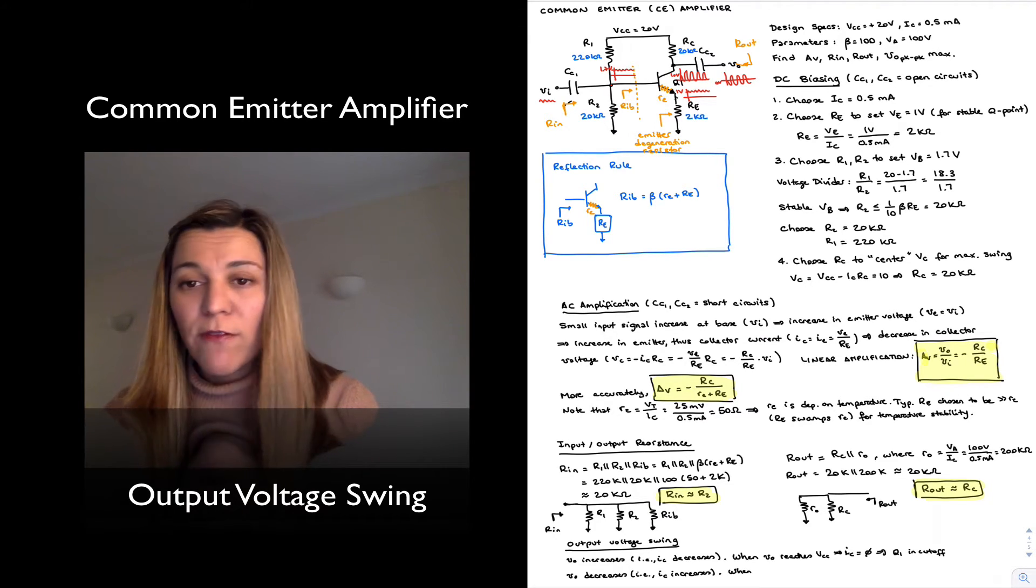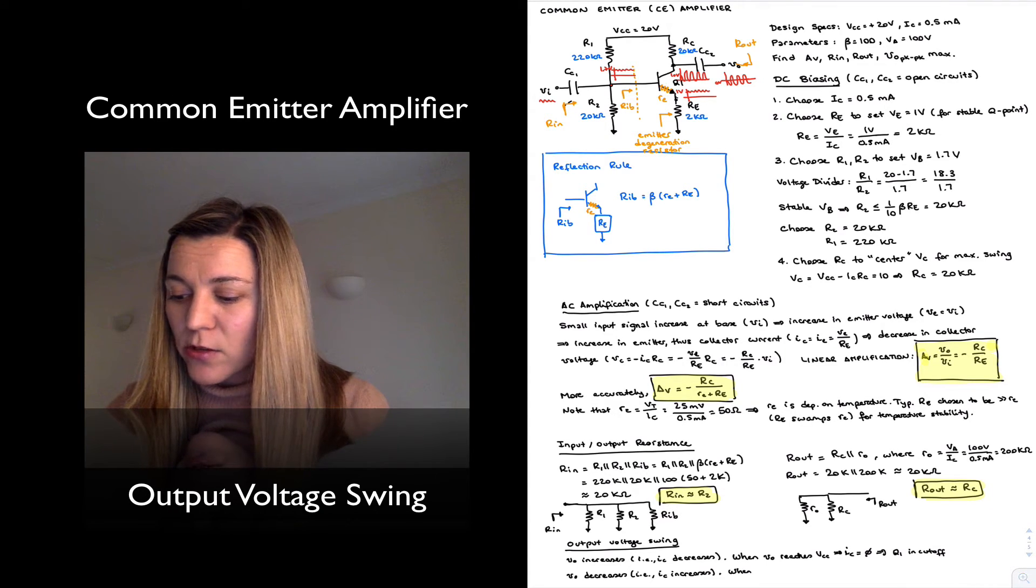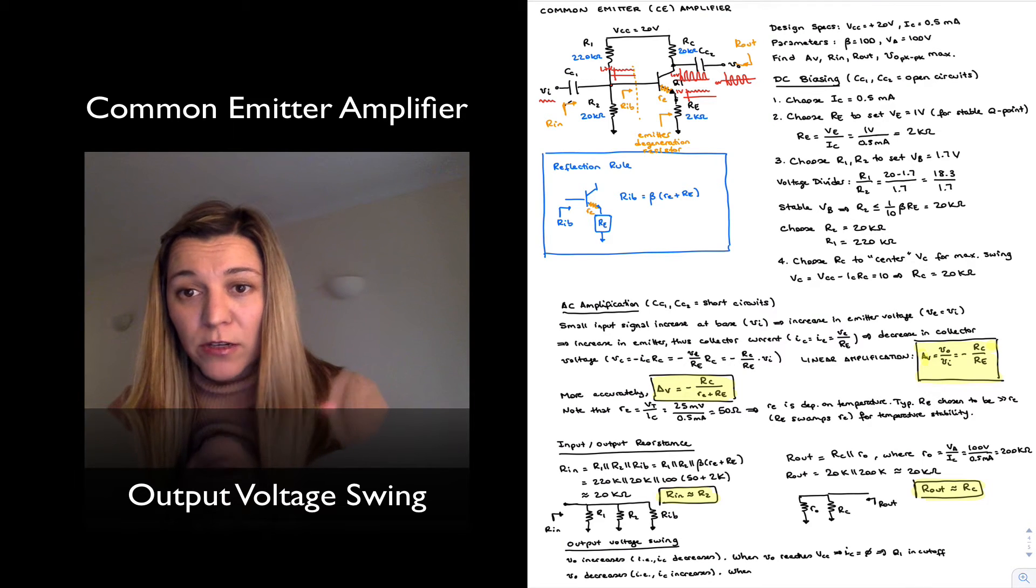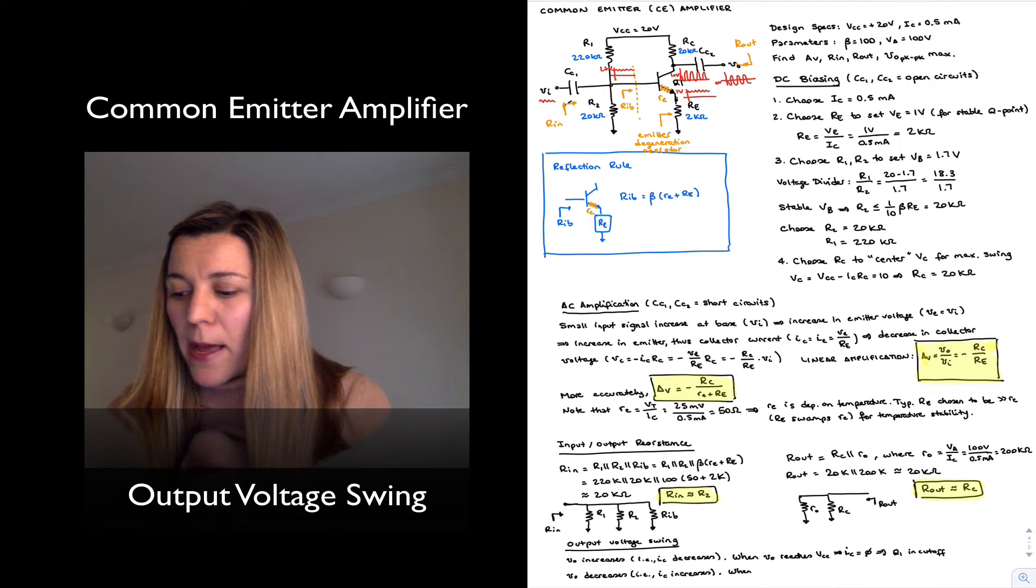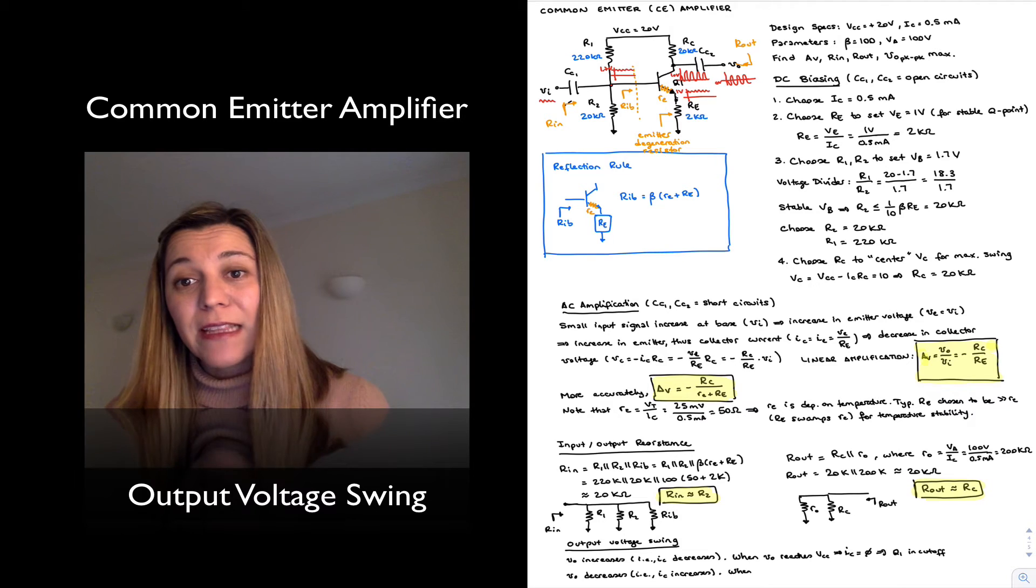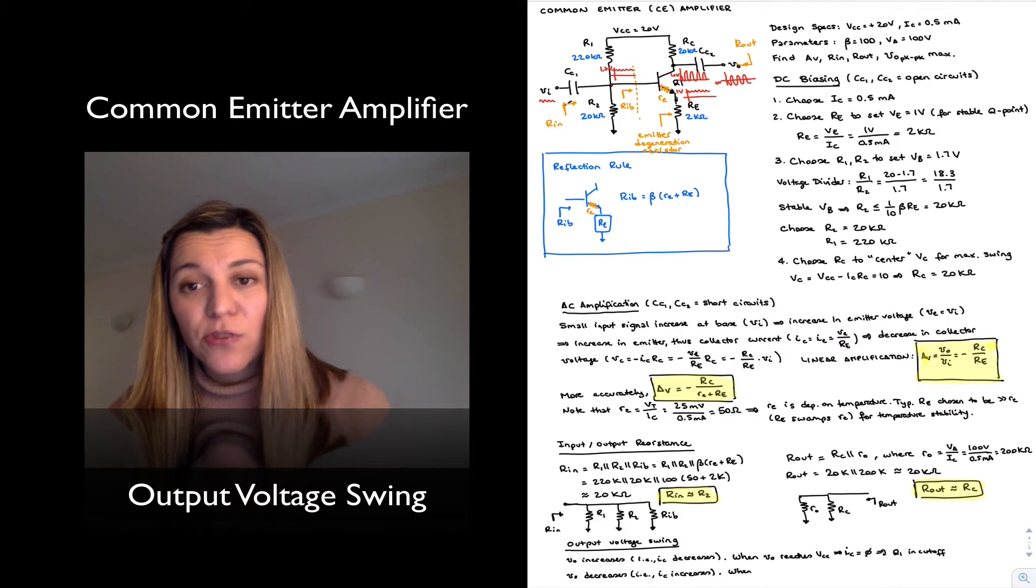We need one volt drop across RE, that's how we're setting our DC bias point, to have VE set to one volt, so we cannot go lower than one volt. But we also need at least 0.3 volts across the collector to emitter terminals in the transistor to keep it out of saturation.